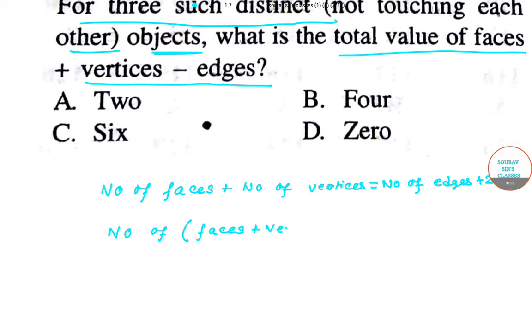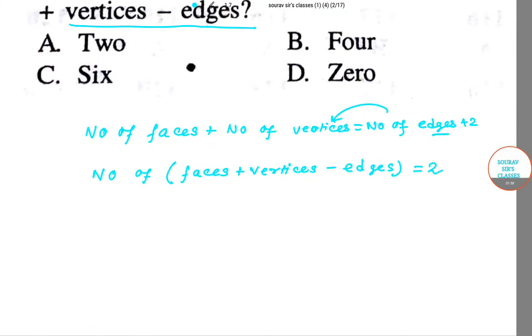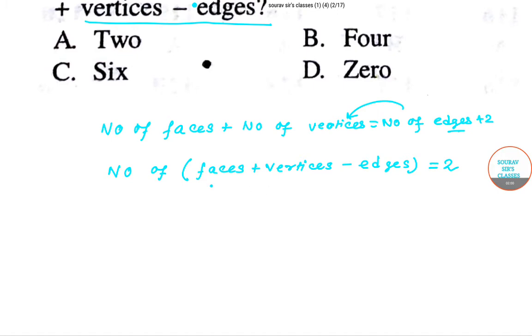We can take the edges to the other side of equals and so it will get negative. So number of edges, that is equals to two.